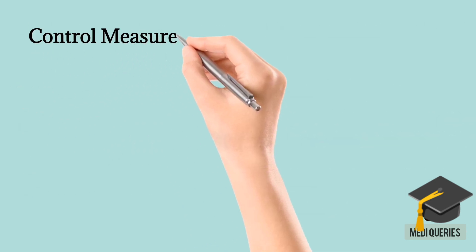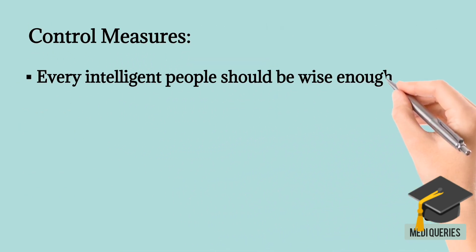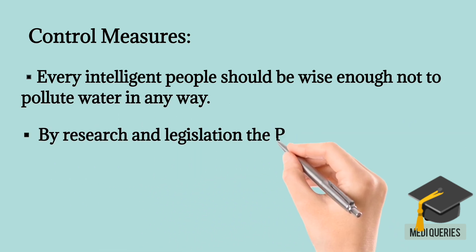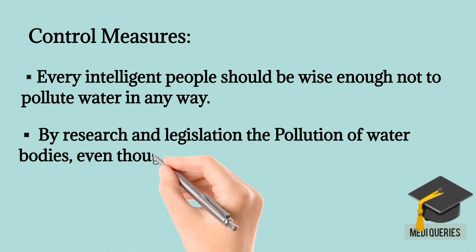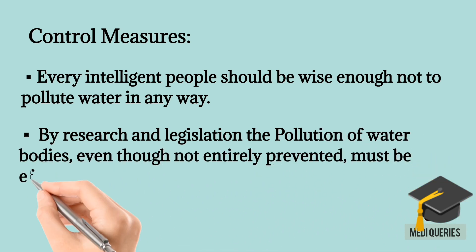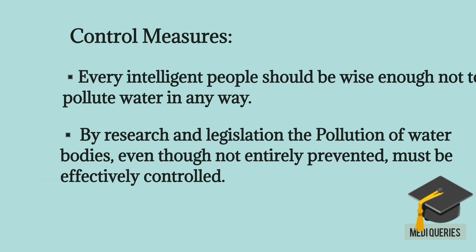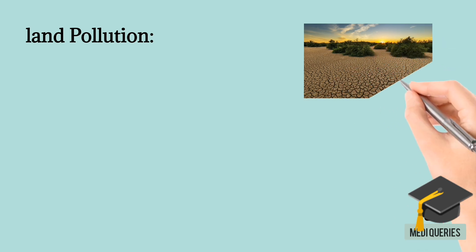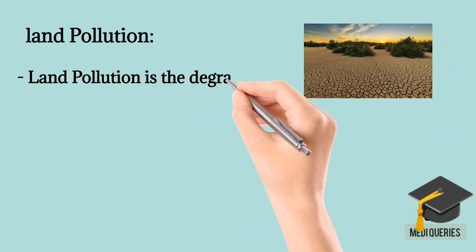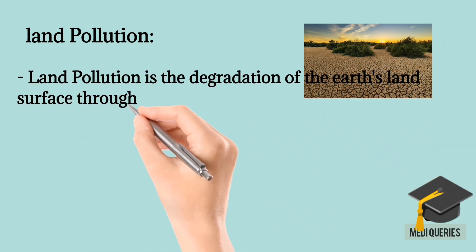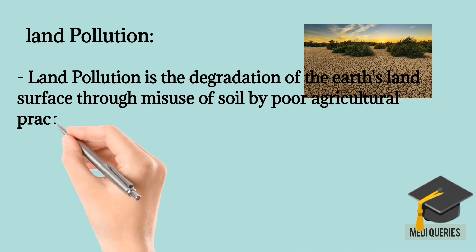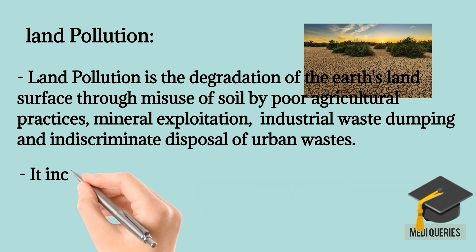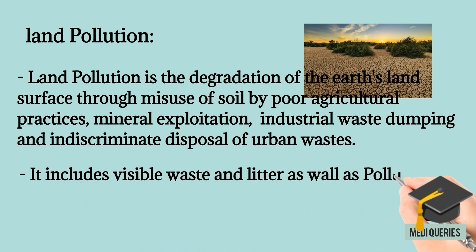Control Measures: even individuals should be wise enough not to pollute water in any way. Through research and legislation, pollution of water bodies, even though not entirely prevented, must be effectively controlled. The third category is Land Pollution. Land pollution is the degradation of the land surface through misuse of the soil by poor agricultural practices, mineral exploitation, industrial waste dumping, and indiscriminate disposal of urban waste.